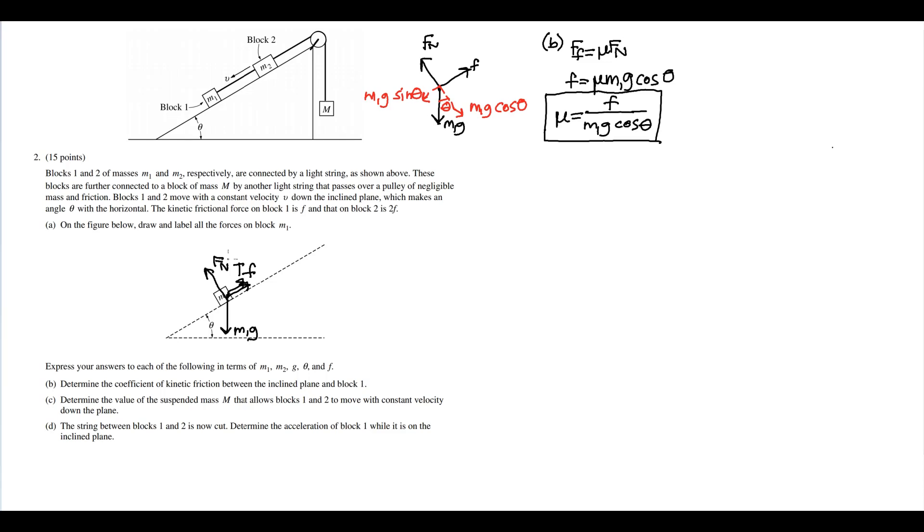Determine the value of the suspended mass M that allows blocks one and two to move with constant velocity down the plane. That means net force must equal zero.